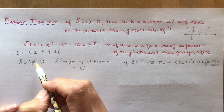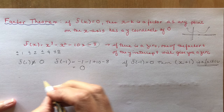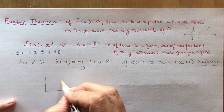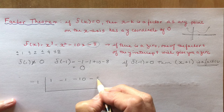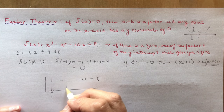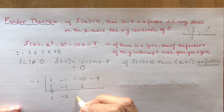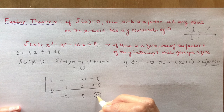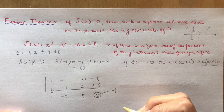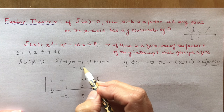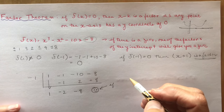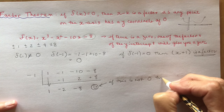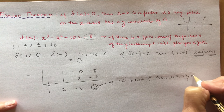So now we're going to do synthetic division. We have x plus 1, so we choose minus 1 because that would be the zero. We write out our chart and plug in 1, minus 1, minus 10, minus 8, and do our synthetic division. Minus 1, add them up: minus 2. Plus 2, add them up: minus 8. Plus 8 gives us 0. If you don't get a 0 here, then you've either made a mistake when you were plugging it in or you did your synthetic division wrong.